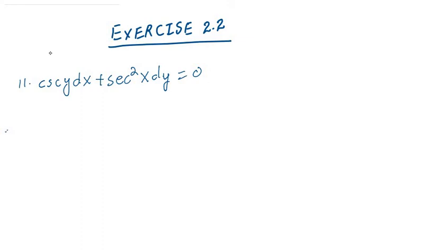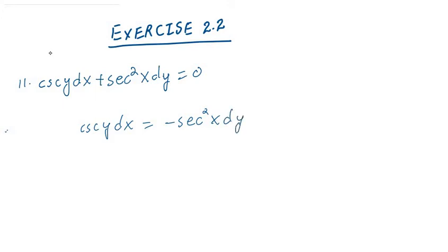Here we have question 11 of Exercise 2.2 from the book written by D.G. Zill. It is an ordinary differential equation of the first order and it is a separable differential equation — you can separate the terms of X and Y. Starting by moving this term on the right side: secant squared X dy.